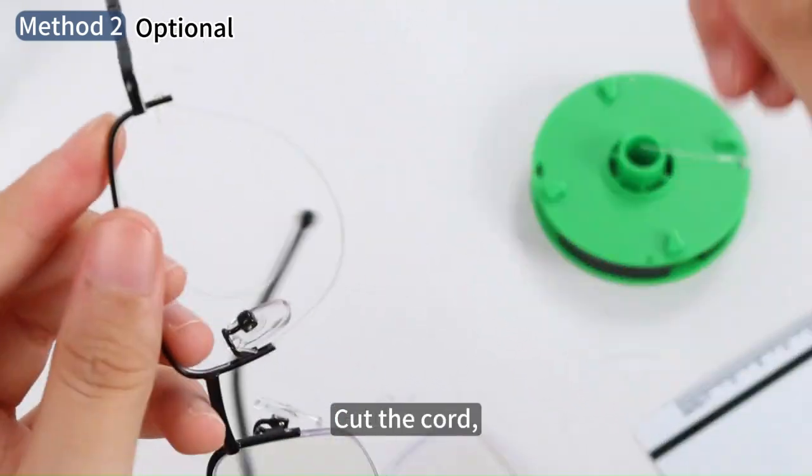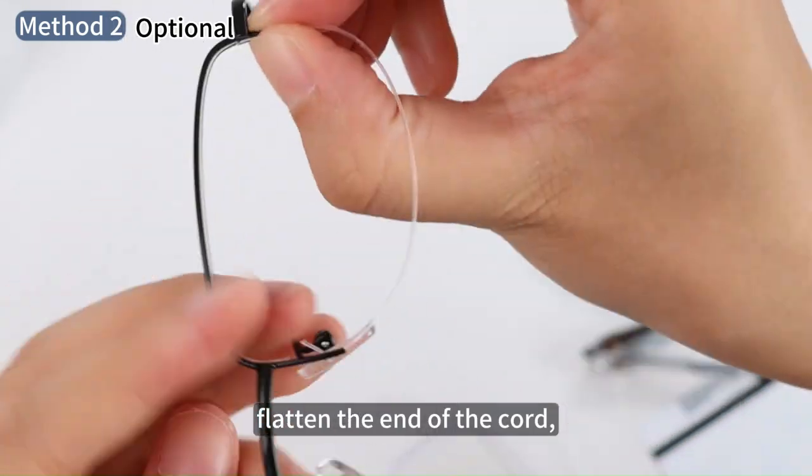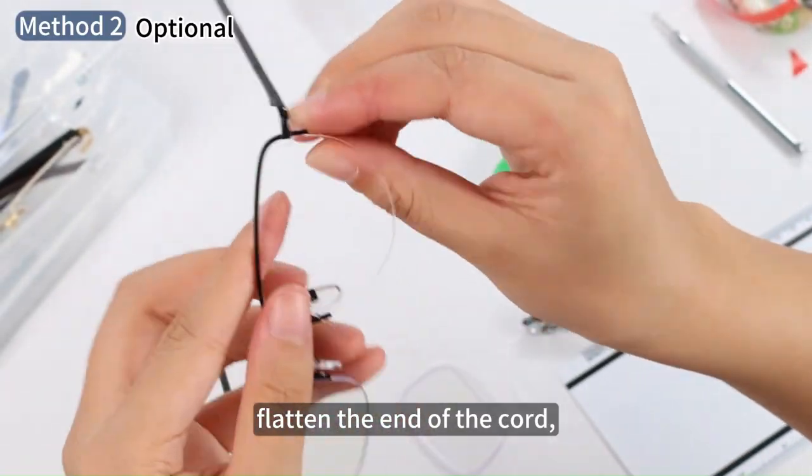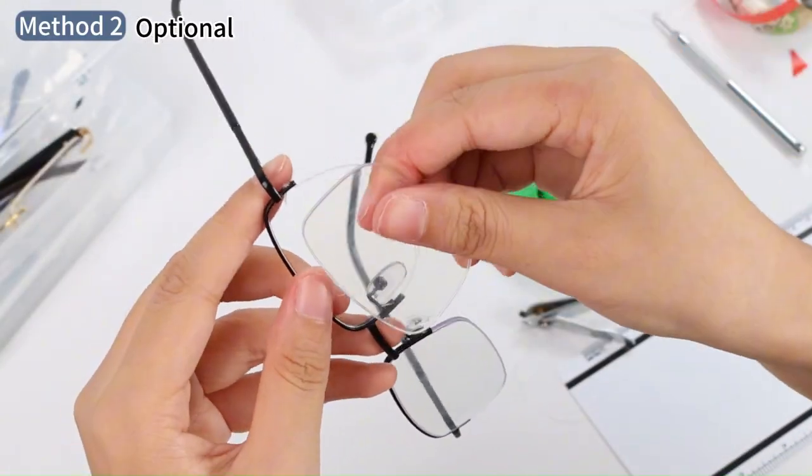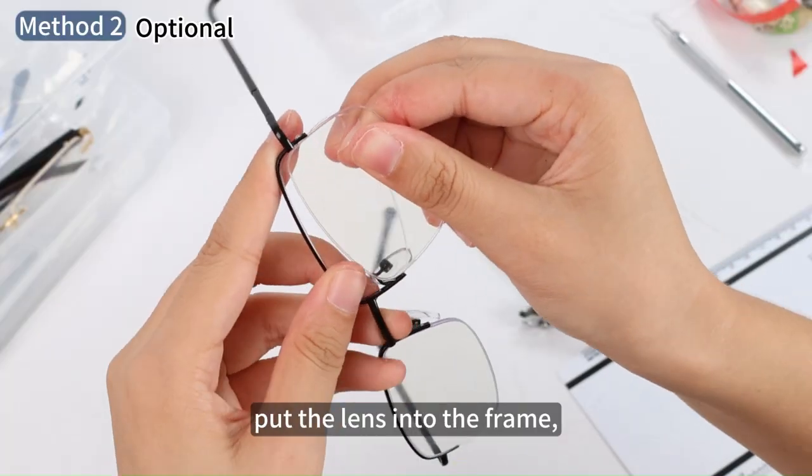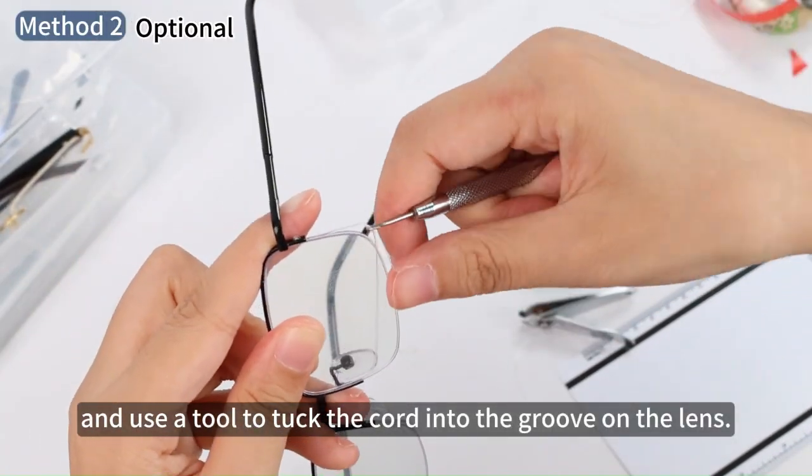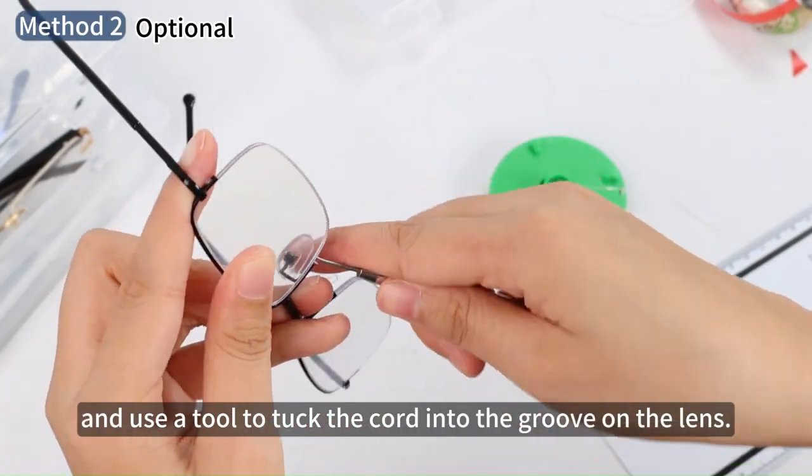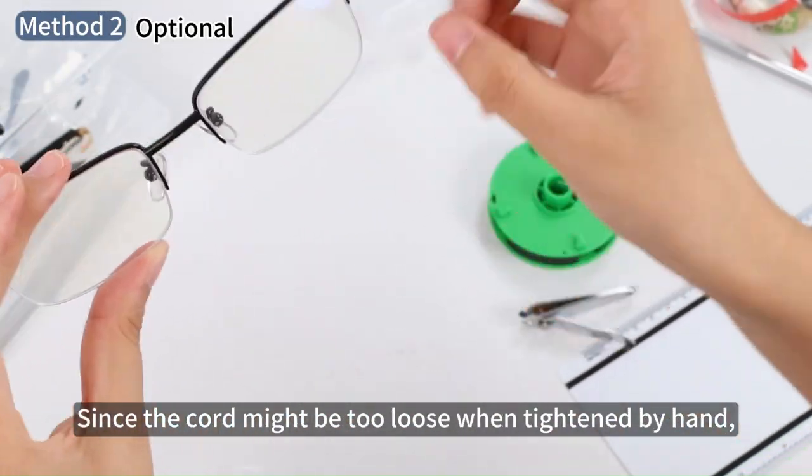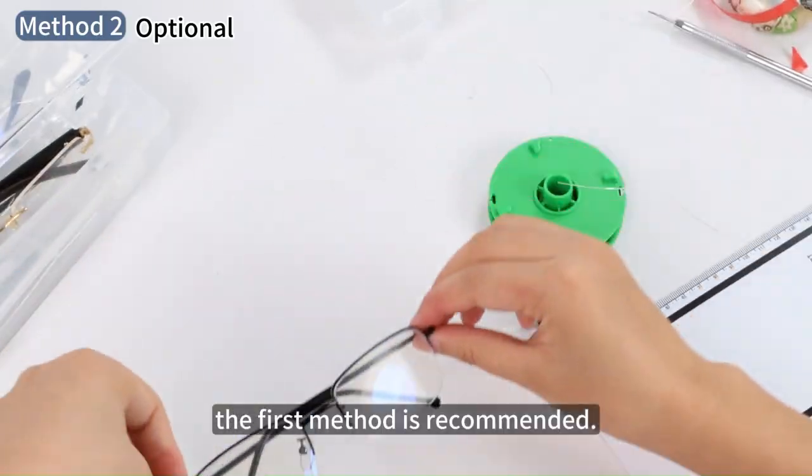Cut the cord. Flatten the end of the cord. Put the lens into the frame and use a tool to tuck the cord into the groove on the lens. Since the cord might be too loose when tightened by hand, the first method is recommended.